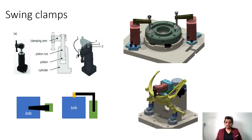These are the different kinds of applications — you can see here the job is clamped using these swing clamps. The selection of a clamp depends on your application: how much space you have, how much cost you can bear. All these different parameters affect the selection. Let's see from where and how you can select these clamps.